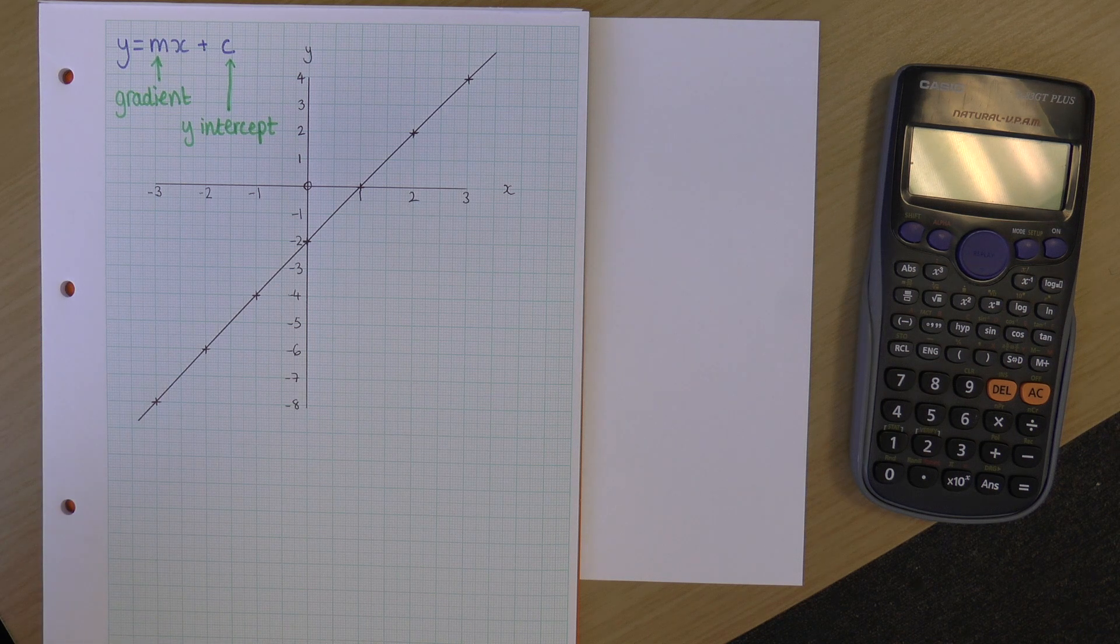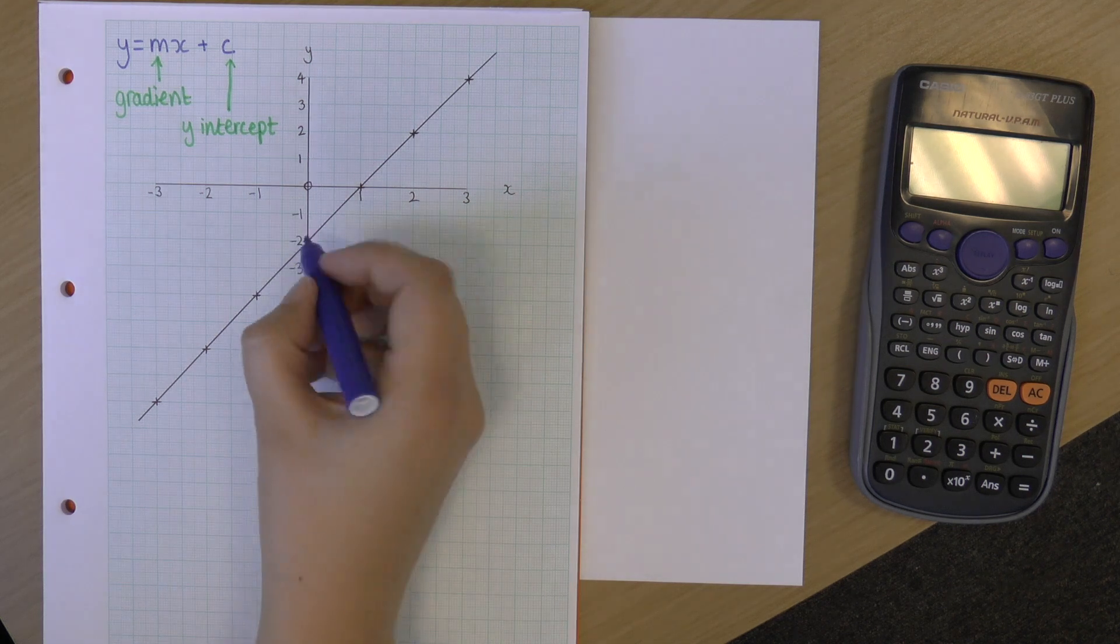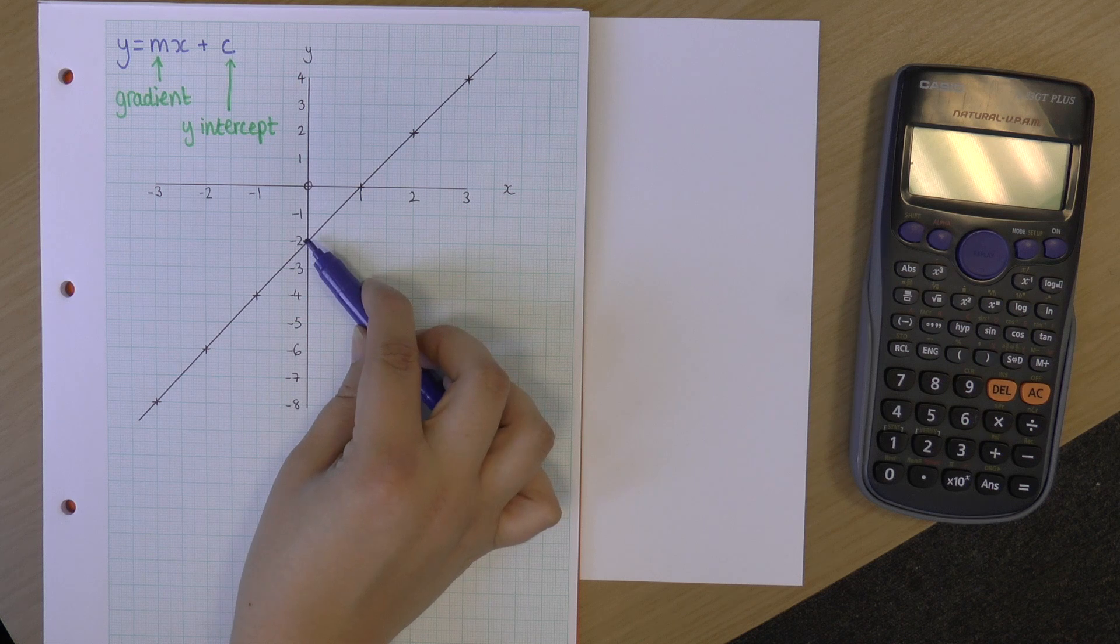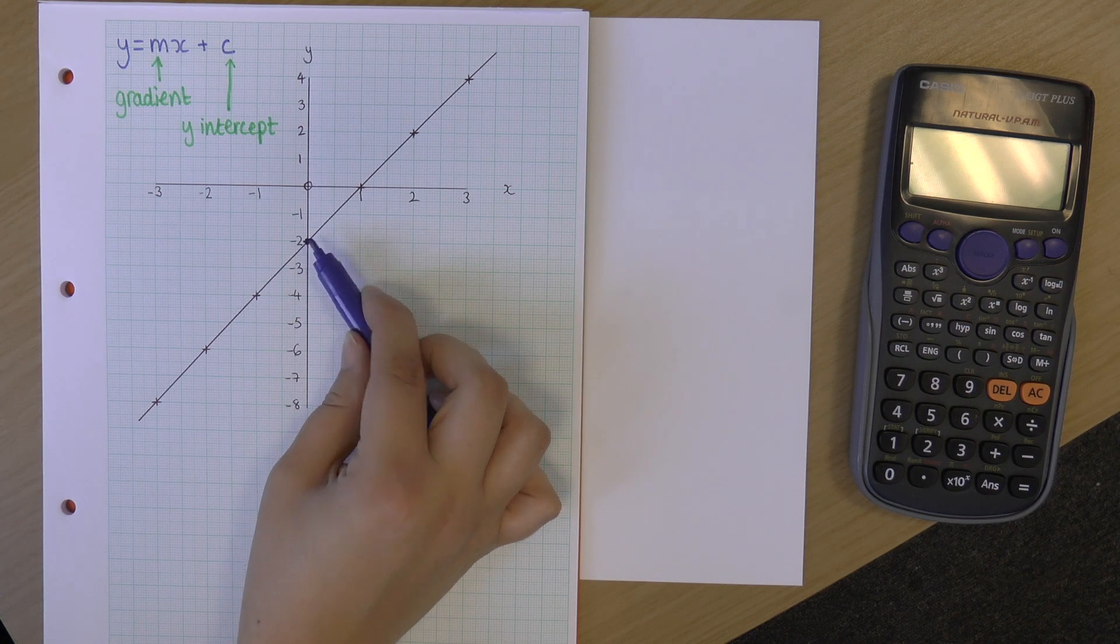So, where does this line cross the y-axis? I've got my y-axis here. Well, the line crosses it just there. And the value of y, where the line crosses it, is minus 2.